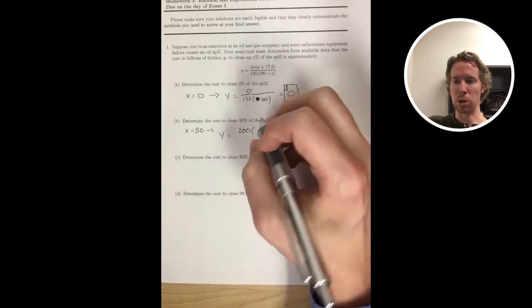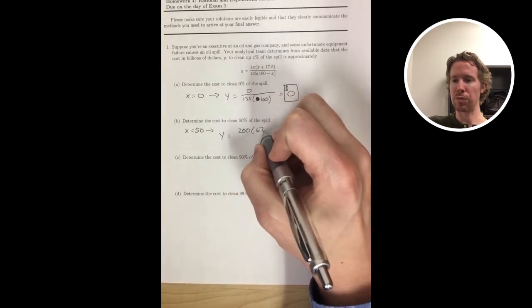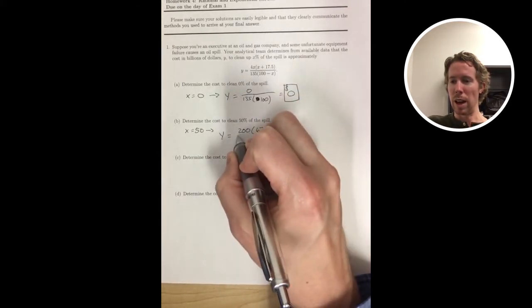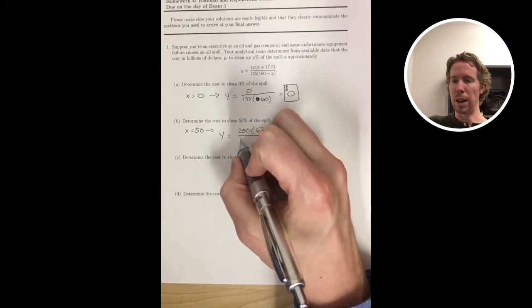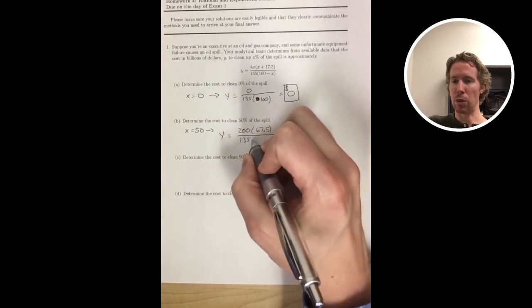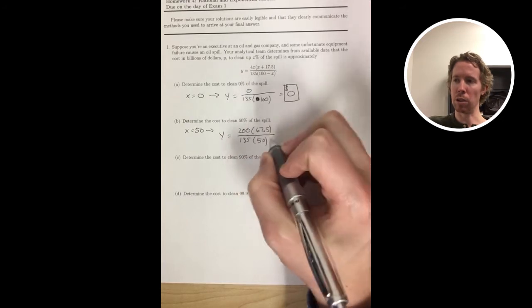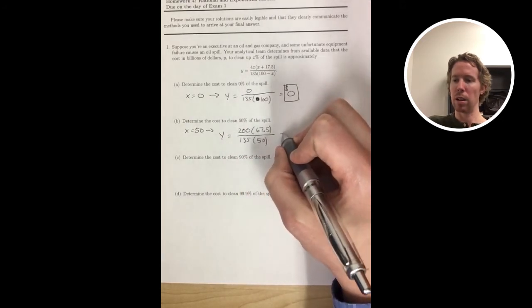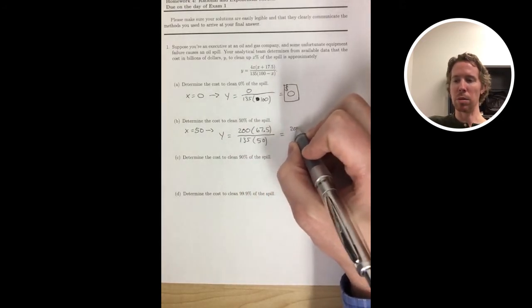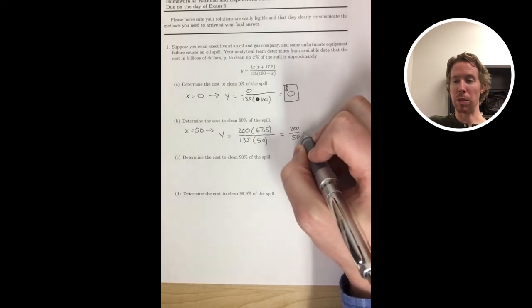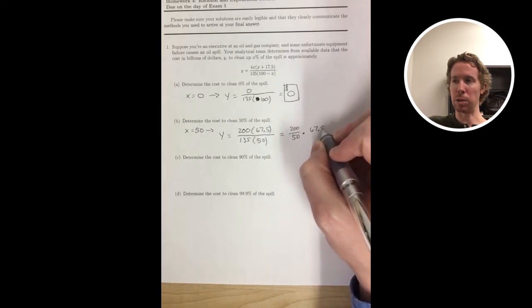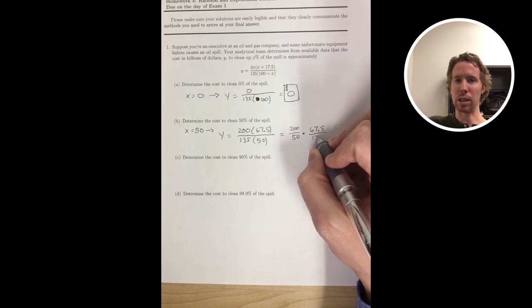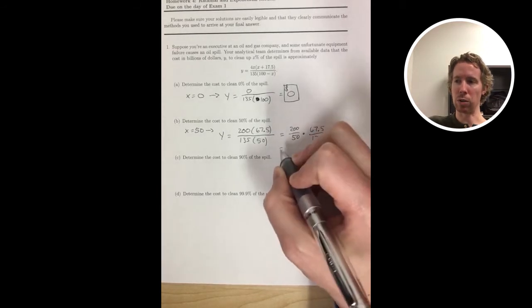And in Part B we're just plugging in 50 for X. And of course if you have a calculator you just multiply this out and simplify it. This one happens to be simple to simplify by hand if you make this observation that 67.5 over 135 is just one half.